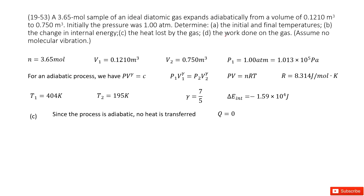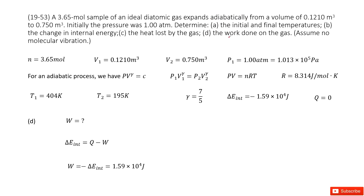Next, we need to find the heat lost by the gas. Since the keyword is adiabatic, that means no energy flows in or out, so Q = 0. Then, we need to find the work done on the gas. Using the first law: ΔU = Q − W. Since Q = 0, we get W = −ΔU. So the work done on the gas equals the negative of the internal energy change.